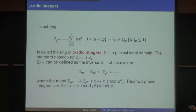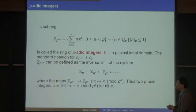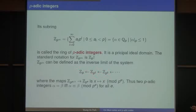The standard notation in number theory is Z_p, so we cannot use that. This is the notation Calderbank and Sloane used in their paper for the first time. The ring of p-adic integers can also be defined as the inverse limit of the system Z/p^e with modular maps. Algebraically, two p-adic numbers are equal if they are equal modulo p^e for all e.